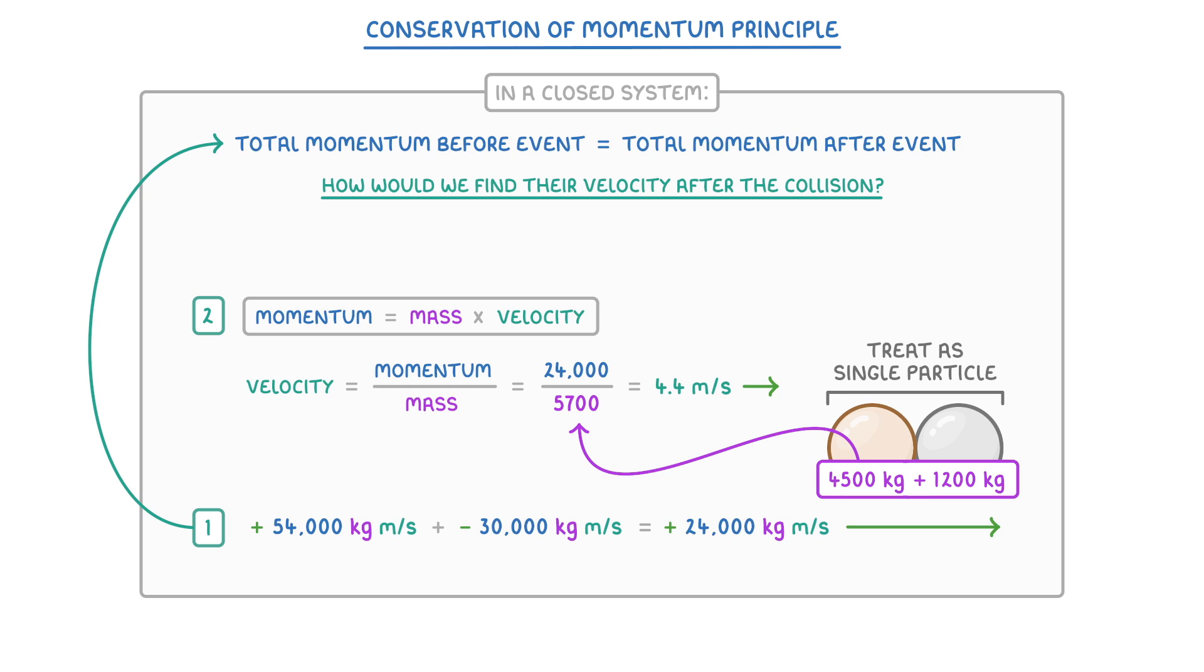So basically, after the dinosaur and the car collide, they both continue moving to the right at a velocity of 4.4 m per second.